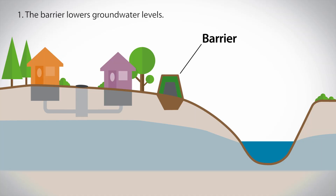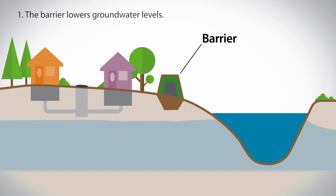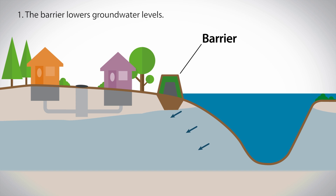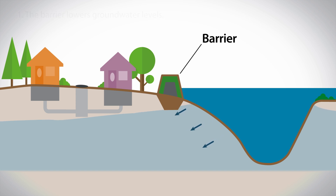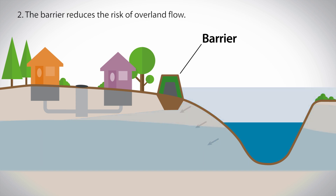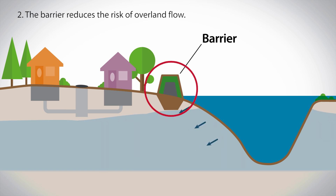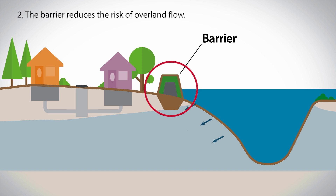A flood barrier will reduce the risk of groundwater flooding in three ways. The barrier will actually help to lower groundwater levels, because part of the barrier will be sunk into the ground, and the groundwater will have a longer path to flow across the barrier. The barrier also protects against groundwater flooding by blocking overland flow, which seeps into the groundwater, contributing to raising the levels and extending the propagation of the groundwater.